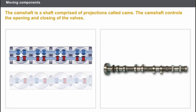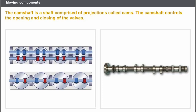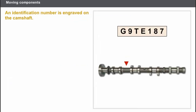If there are two camshafts, the first controls the inlet valves and the second controls the exhaust valves. The opening and closing of the valves is synchronised to the movement of the crankshaft — this is the valve timing setting. An identification number is engraved on the camshaft: the first three characters indicate the engine type, the next character distinguishes the inlet camshaft (A) from the exhaust camshaft (E), and the last few characters are used by the manufacturer.